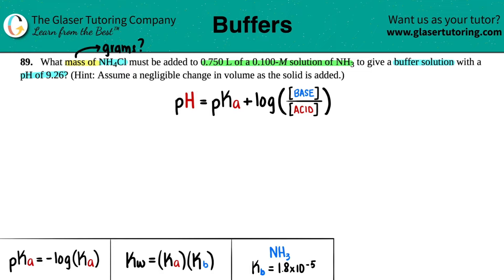Right off the bat, I know pH is going to be 9.26. Now keep in mind a buffer solution requires you to have actual quantities of a base and an acid, and they have to be conjugates of each other.